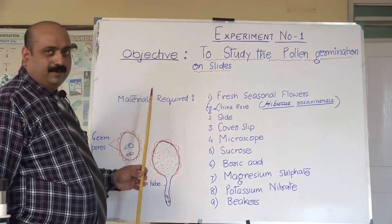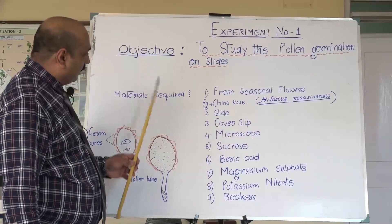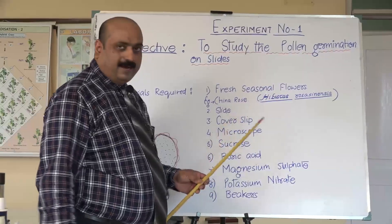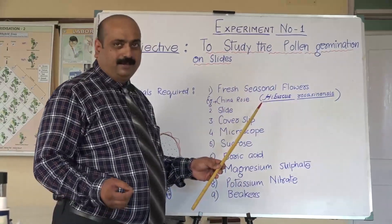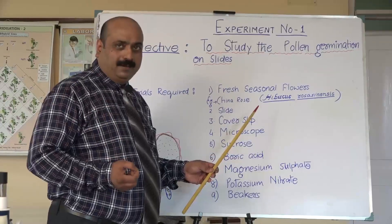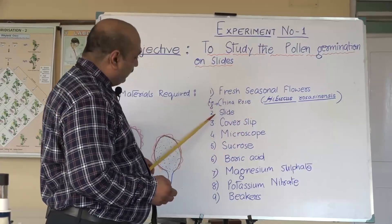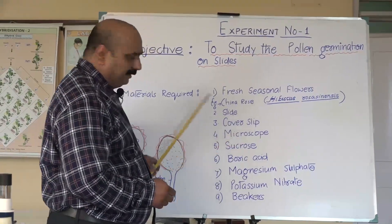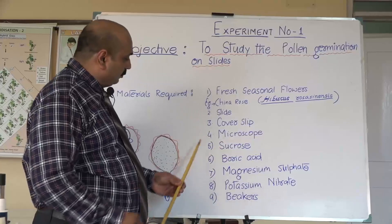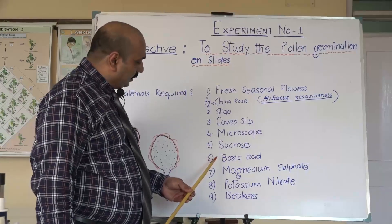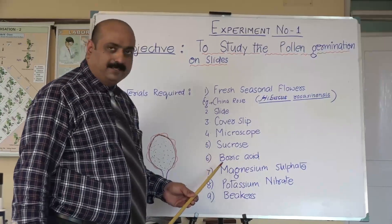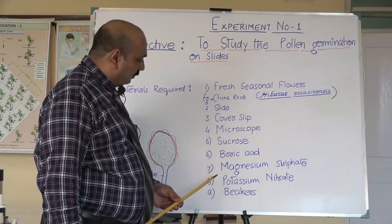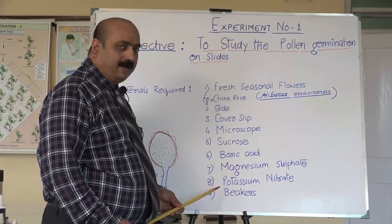Materials required to do this experiment: fresh seasonal flower — I prefer china rose because the pollen grain dust comes out very easily. Slide, cover slip, compound microscope, and the chemicals required are sucrose and boric acid, which are macronutrients, and micronutrients include magnesium sulphate and potassium nitrate.